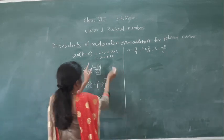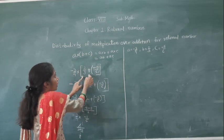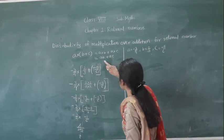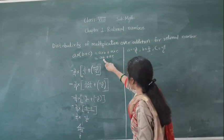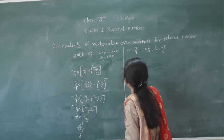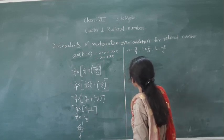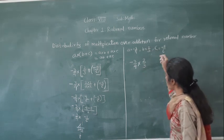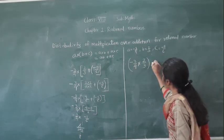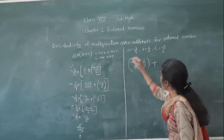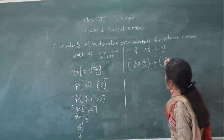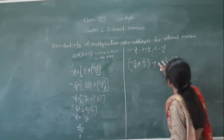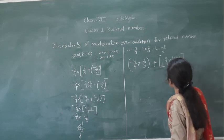Now let's solve the right-hand side using the distributive form: a into b plus a into c. What is A? A is minus 3 upon 4, multiplied by B which is 2 upon 3, plus A which is minus 3 upon 4, multiplied by C which is minus 5 upon 6.